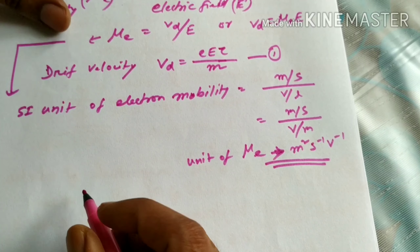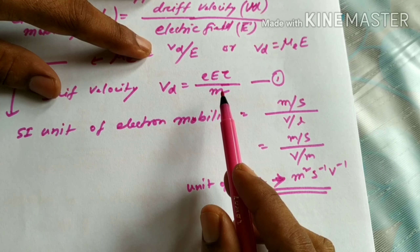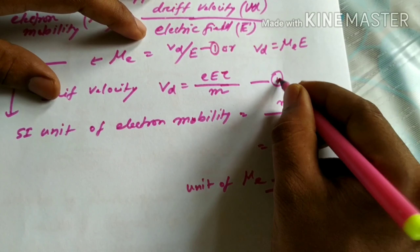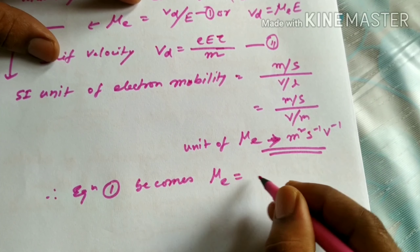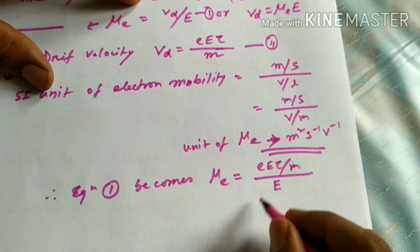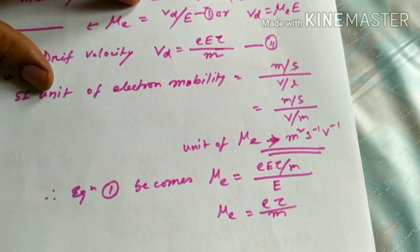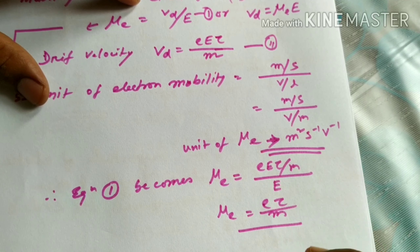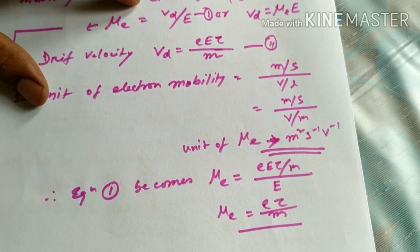Let me consider electron mobility in terms of the relaxation time. Substituting the expression for Vd into the formula, mu of E equals eE tau divided by m, divided by E. So mu of E equals e tau divided by m. This is the electron mobility in terms of relaxation time.